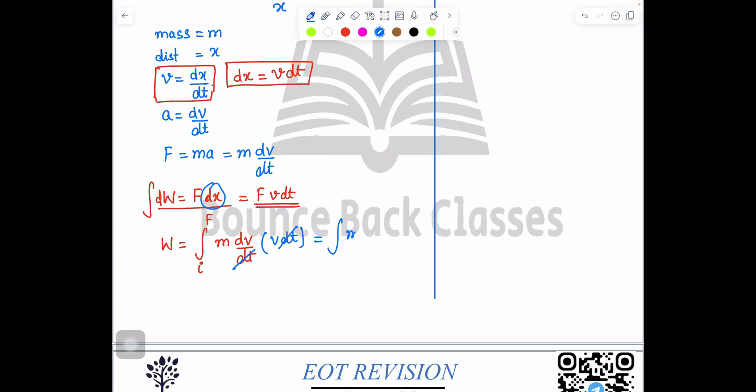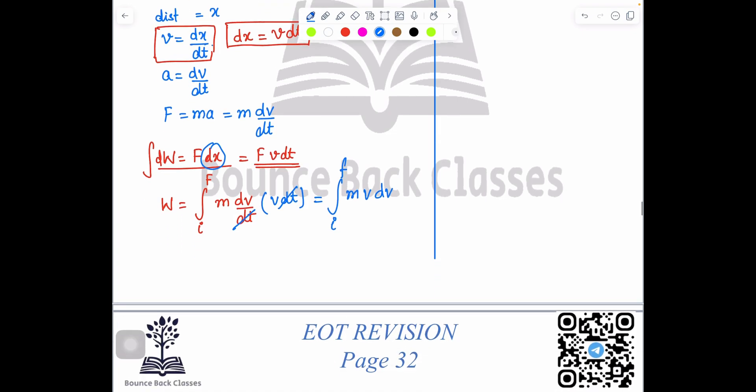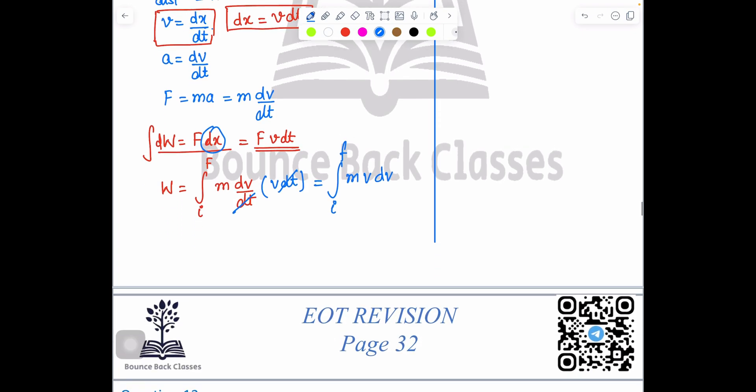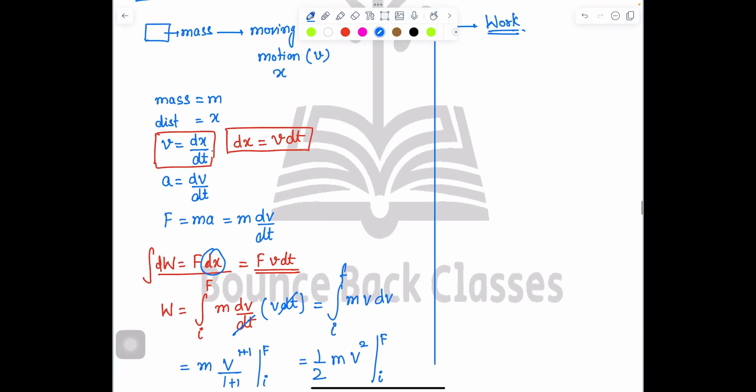Solve it. Upper limit minus lower limit. So what we have? m outside, v one plus one upon one plus one, limit is initial to final. So what is the value? Half m v square, limit is i to f.